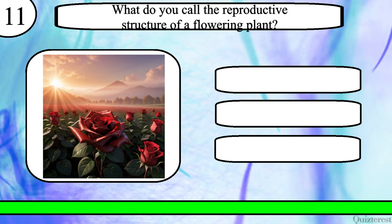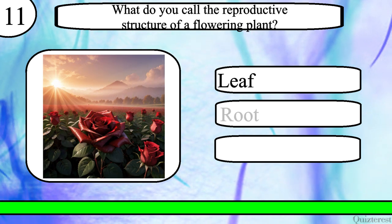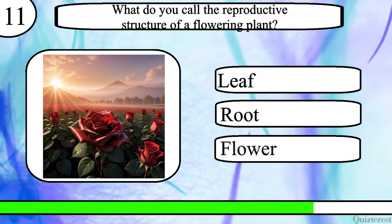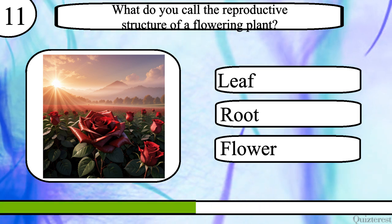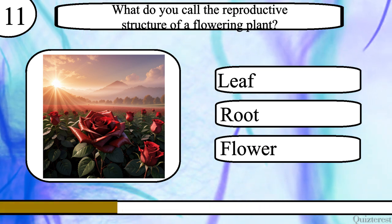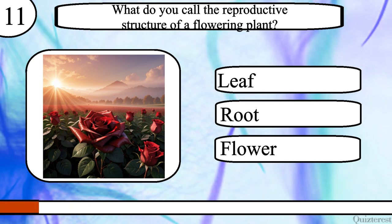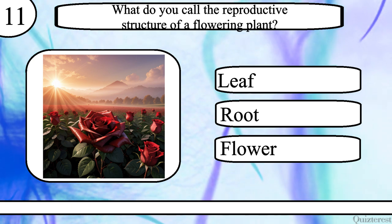Question 11. What do you call the reproductive structure of a flowering plant? Leaf, root or flower? The correct answer is flower.